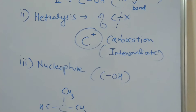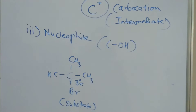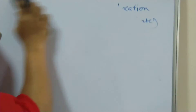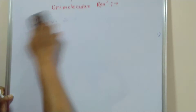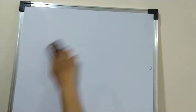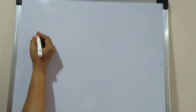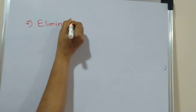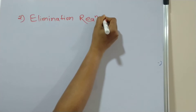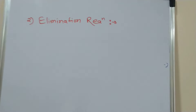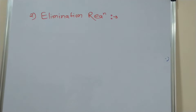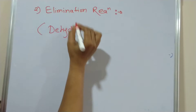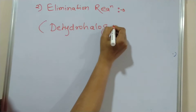We will move towards the next point in the chemical properties of alkyl halides. The next reaction is elimination reaction, which is also called dehydrohalogenation.